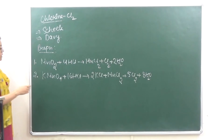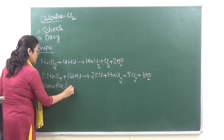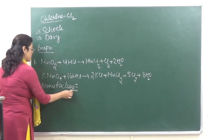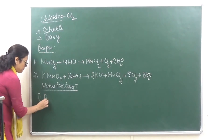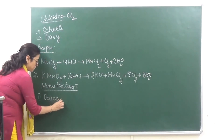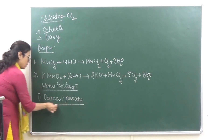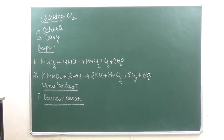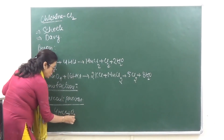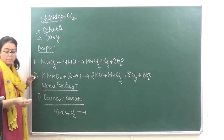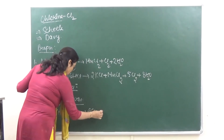For the industrial manufacture of Chlorine, it is manufactured by Deacon's process. In Deacon's process, we take HCl and treat it with oxygen, and we get Chlorine plus water.